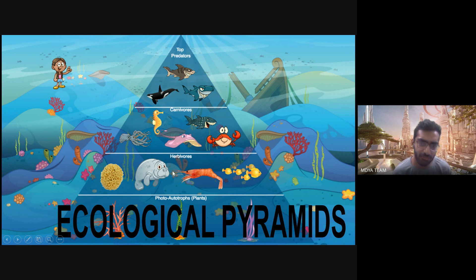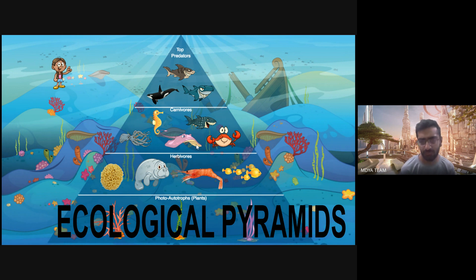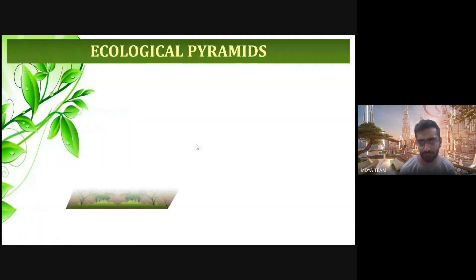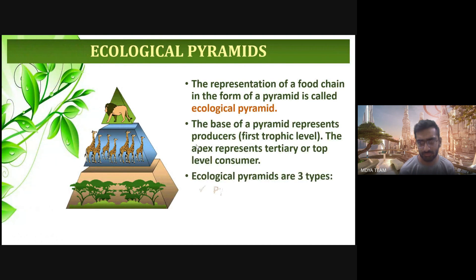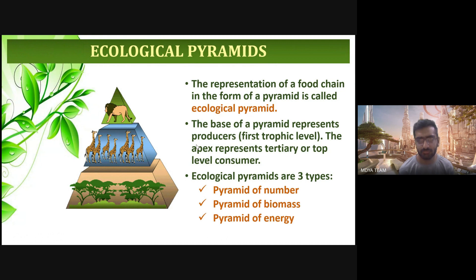Carnivores consume the herbivores, and top predators consume the most complex form of carnivores. The ecological pyramid is the representation of a food chain in the form of a pyramid.